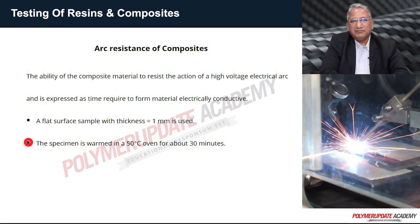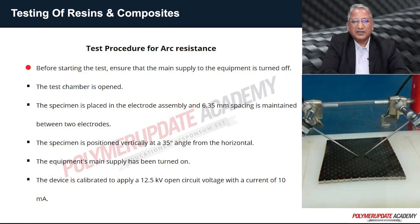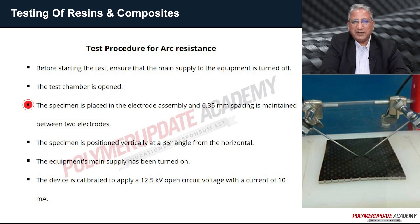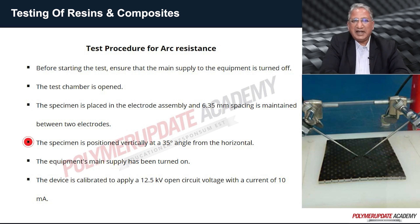The specimen is warmed at 50 degrees centigrade in an oven for about 30 minutes. Before starting the test, ensure that the main supply of the equipment is totally turned off. The test chamber is opened, the test specimen is placed in the electrode assembly, and a 6.35 mm spacing is maintained between the two electrodes. The specimen is placed in a vertical position at an angle of 35 degrees from the horizontal.